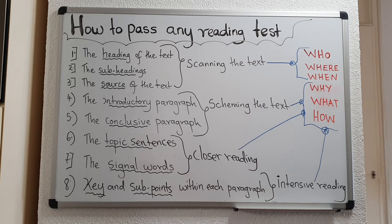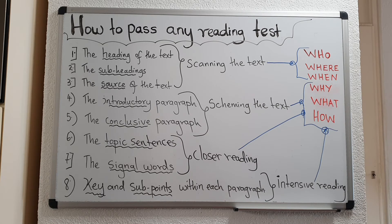For example, one of the first questions could be: how many people died in the war? — assuming that the text is talking about war. When you scan, you also have to remember to highlight. Use your highlighter for all the numbers in the text that you see, because usually the first few questions may ask you something to do with figures or numbers. Read the first question after scanning the text, and you will find that you should be able to answer the question straight away. The second question you will also probably be able to answer after scanning the text.